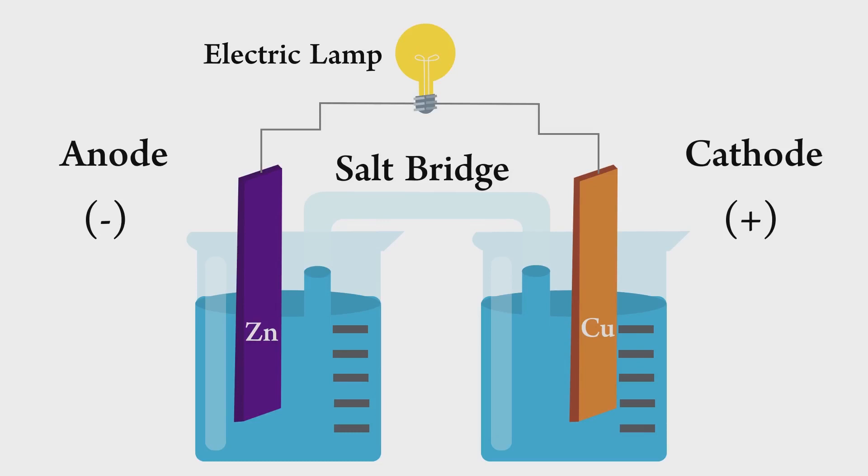Salt bridge connects the two halves of the cell and prevents the ions of the more noble metal from plating out at the other electrode. Electric wire and lamp complete the circuit.